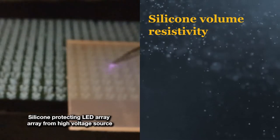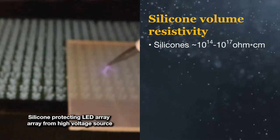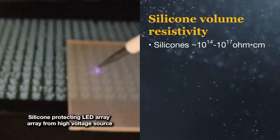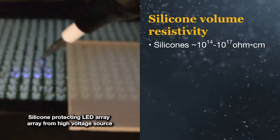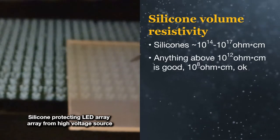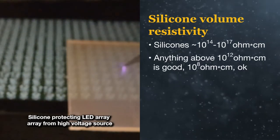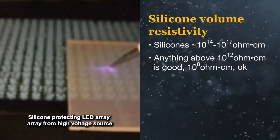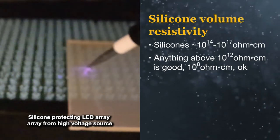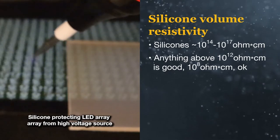Typically silicones have volume resistivity values of 10 to the 14th to 10 to the 17th ohm centimeters. For most applications, good electrical insulation requires the volume resistivity to be above 10 to the 12th or at least 10 to the 8th ohm centimeters.